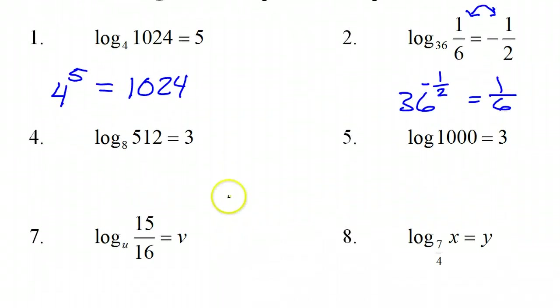Number 4. Starting with the base. The base is 8. These two kind of switch places. So 8 to the 3rd power must equal 512.